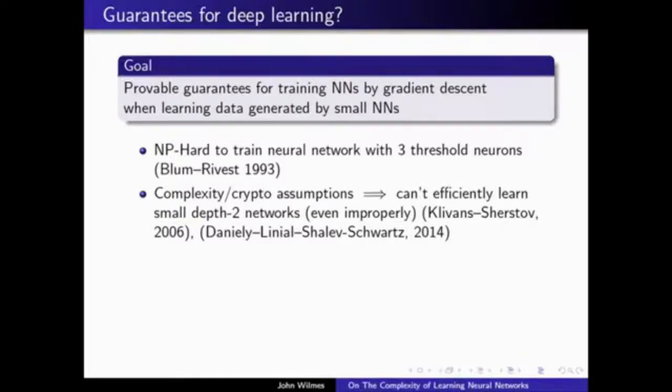The big overall goal motivating this ongoing line of research is to try to understand why it is that training neural networks by gradient descent is so unreasonably effective on real world data. As a first step toward that goal, it would be nice to at least understand whether we can efficiently learn data that is itself generated by some small, nice, well-behaved neural network.